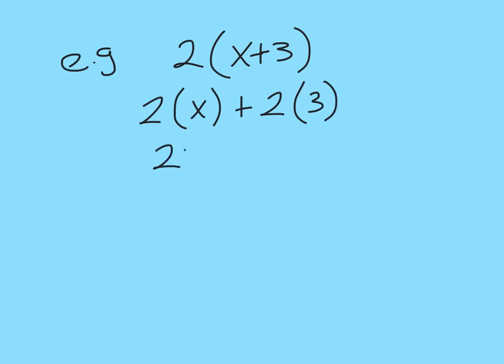So 2 by x gives me 2x, and 2 by 3 gives me 6, and that's my final answer. So all we just need to make sure to do, and you can also use the loop method here too, 2 by x and 2 by 3.